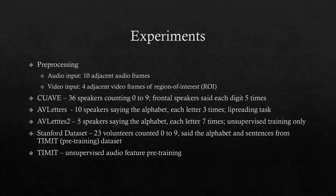A diverse set of data was used to learn features. AV letters and QAV were used for both supervised and unsupervised learning, while the rest were used for unsupervised learning only. QAV consisted of 36 frontal-facing speakers counting from 0 to 9 and saying each digit 5 times. The AV letters dataset contained 10 speakers saying the letters from A to Z 3 times, with raw audio used for evaluation on a visual-only lip reading task. For AV letters 2, there were 5 speakers saying the letters 7 times. The Stanford dataset consisted of 23 volunteers counting from 0 to 9, saying the alphabet and select sentences from the TIMIT dataset.